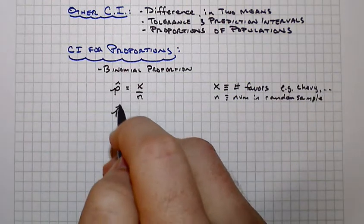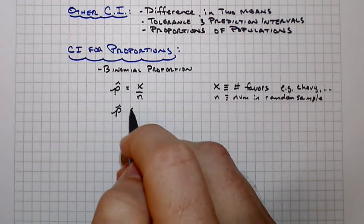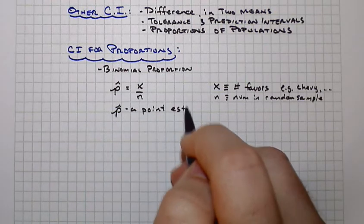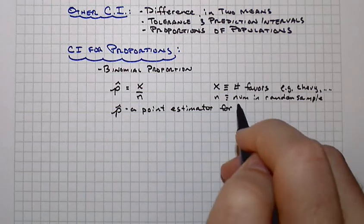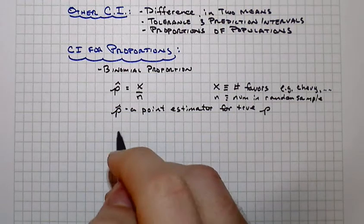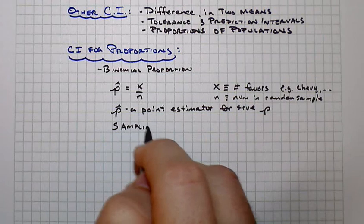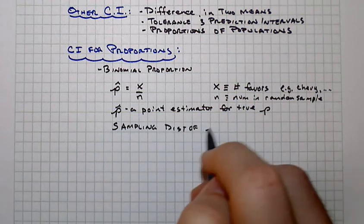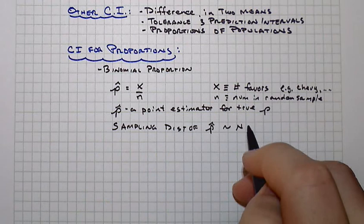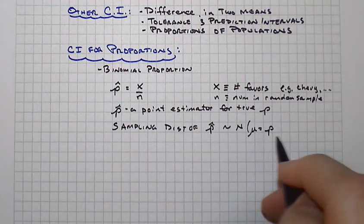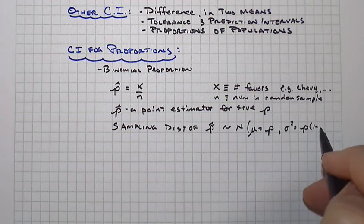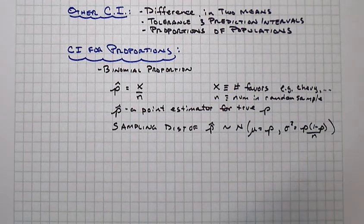And so p-hat becomes a point estimate or point estimator for the true population proportion. And so one of the questions, of course, is to ask, well, what's the sampling distribution of p-hat? And it will be approximately normal with mean equal to the true proportion and the variance equal to p times one minus p over n. Right? This is a binomial related type of variable.